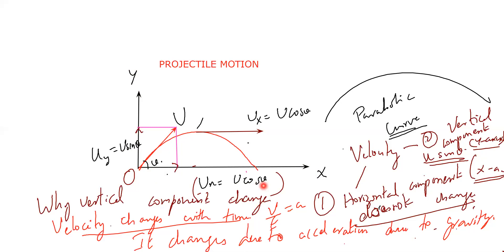The vertical component is U sin theta and the horizontal component is U cos theta. As the projectile goes up, it must come down. Why does it come down? It comes down due to the acceleration due to gravity. Since it comes down due to gravity, the vertical component changes — the acceleration acts on the vertical component.